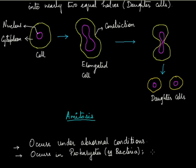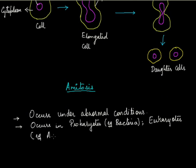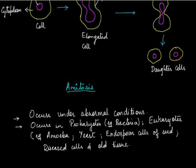It also occurs in eukaryotic cells. Examples of eukaryotic cells where amitosis occurs include amoeba, which is a protozoan, and yeast, which is an example of fungi. It also occurs in the endosperm cells of seeds, which occur in plants, and in diseased cells and old tissue. Remember one point: in eukaryotes, amitosis is not the normal method of cell division. It does occur under some specific or abnormal conditions.